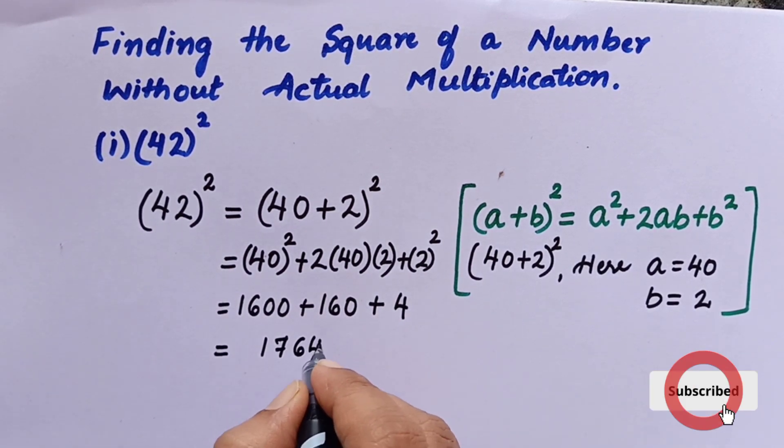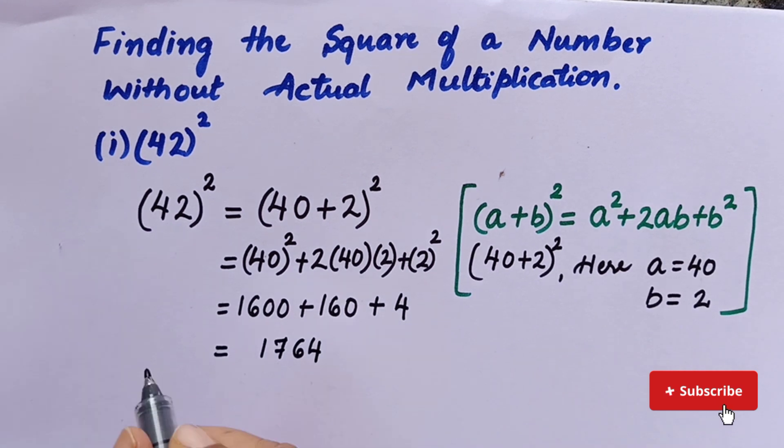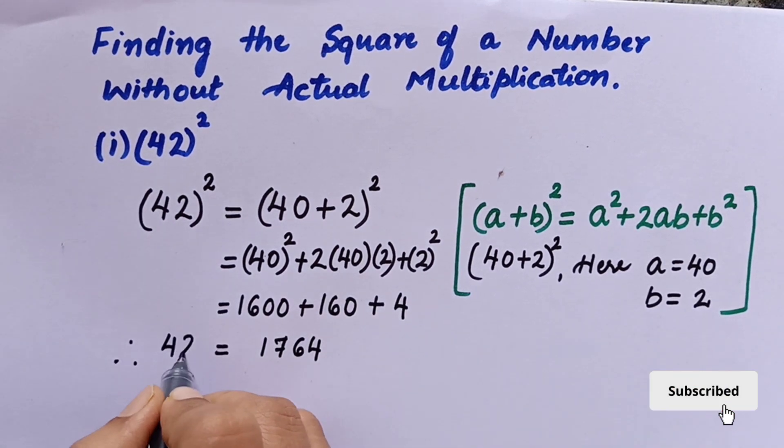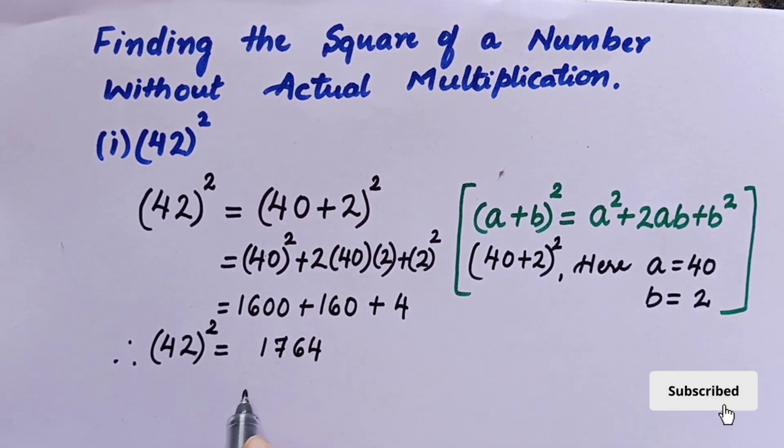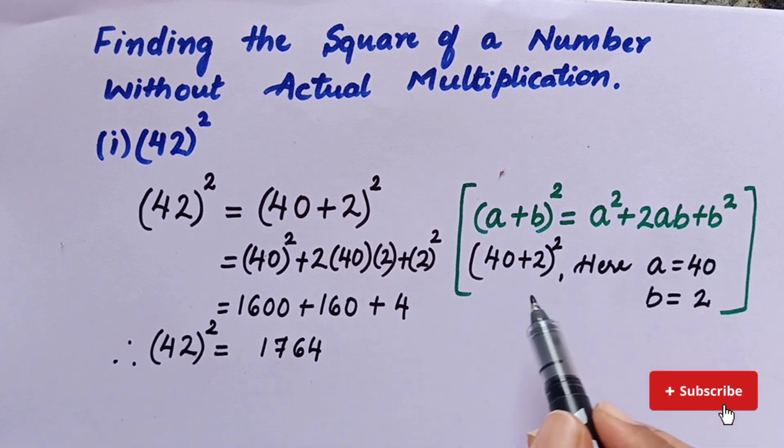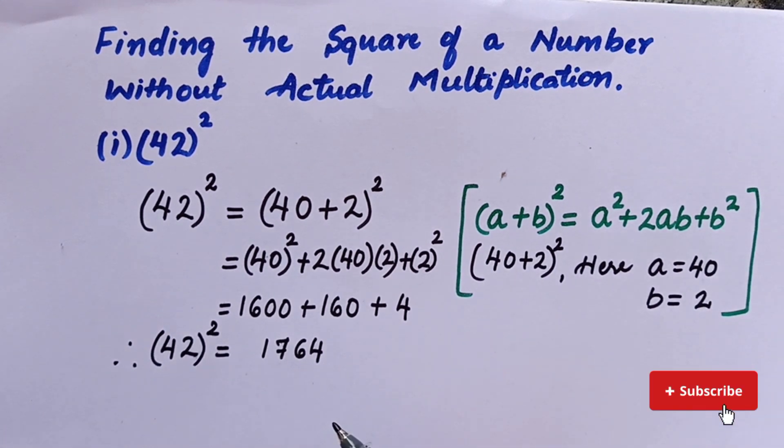The answer is 1764. Therefore, 42 whole squared is equal to 1764. I hope you got this, how to solve with the help of identity. Thank you.